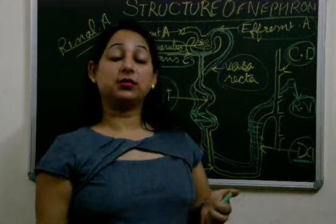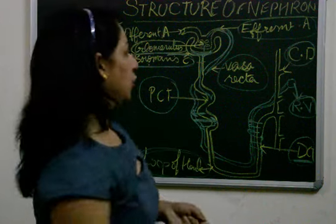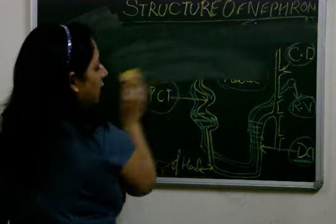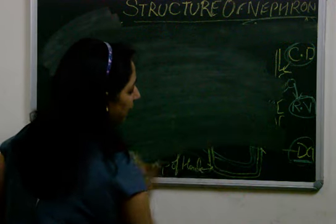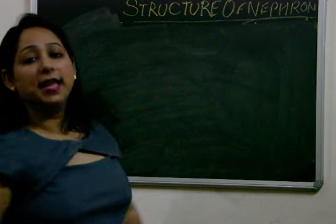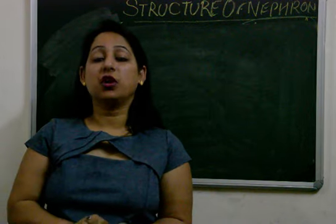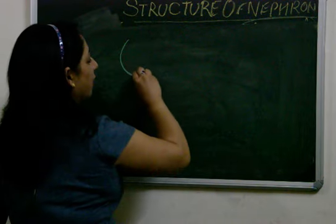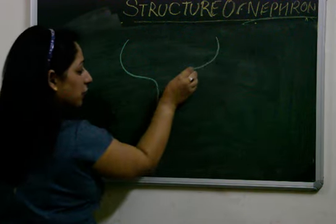One question is related to the structure of nephron, and the other structural question which is very, very important and has come in many board exams of ICSE 10th is the structure of malpighian capsule. When we see the structure, this is the same structure which I have drawn, but this is a larger view of the structure.